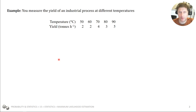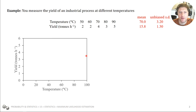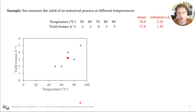We're going to take an example where we're looking at the yield of a process, and how that changes with temperature. We can calculate the mean and unbiased standard deviation, and we can plot our data — there's the mean. It looks like there might be a trend going on: as temperature increases, so does yield.